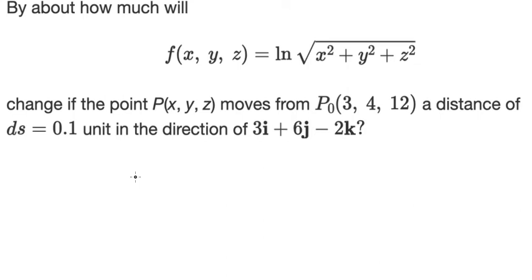Hello everybody. Today I will talk about calculus. The topic is about directional derivatives. I will show you how to answer: by about how much will the function f(x,y,z) change if the point P(x,y,z) moves from P₀(3,4,12) a distance of dh equals 0.1 unit in the direction of 3i plus 6j minus 2k.